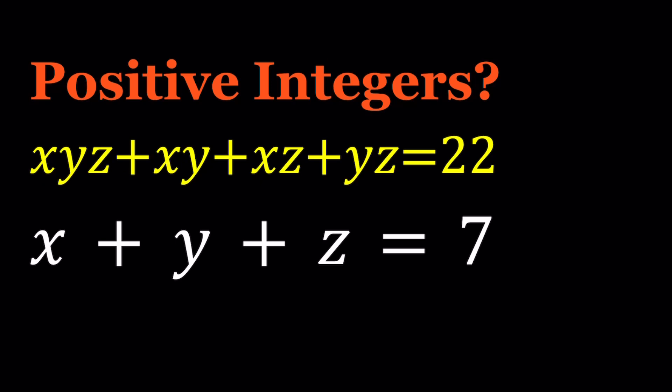Now we have xyz + xy + xz + yz = 22, and x + y + z = 7. And x, y, z are all positive integers.